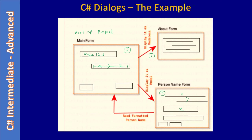Once the dialog is displayed as a modal dialog, we will examine that the caller is blocked. The main form is calling the person name form as a modal dialog, and once the dialog is displayed we will check whether we can access the calling form — we will try reading a field or moving it — to confirm that the modal display is blocking the caller. Once you click OK or Cancel, the calling dialog receives focus again.